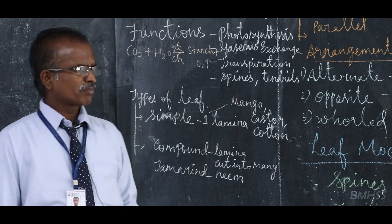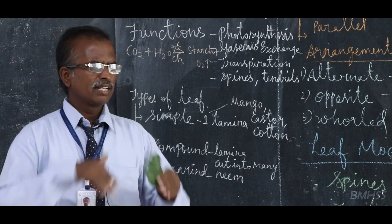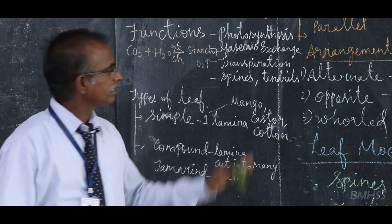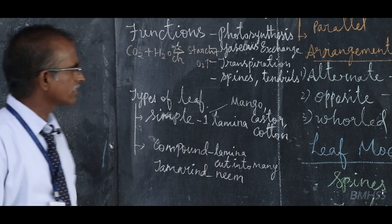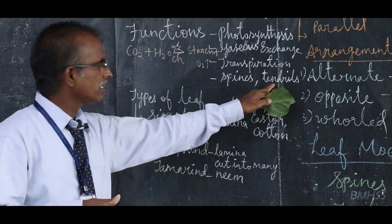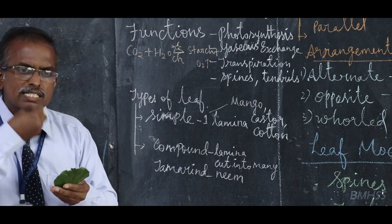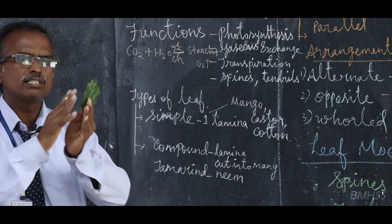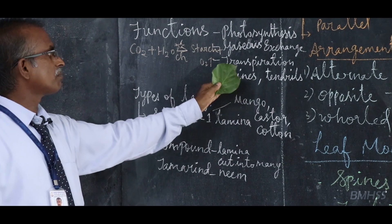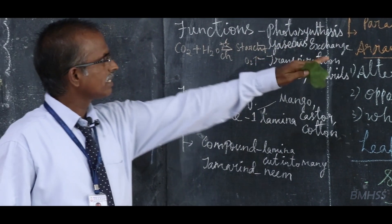In some plants, the leaf is modified to show different functions — spine-like structures, tendrils, and insect-eating structures such as the pitcher plant. These other modifications we will study later on.